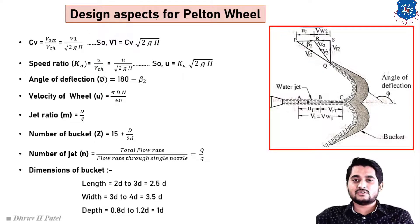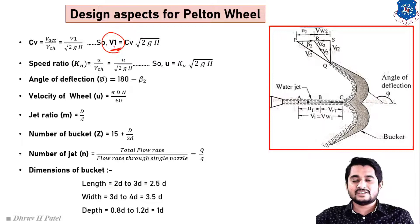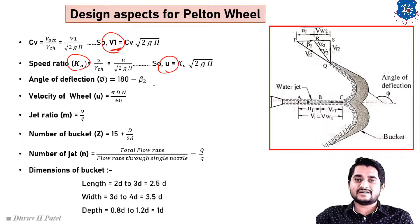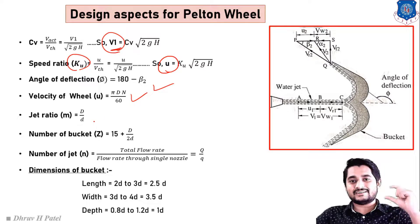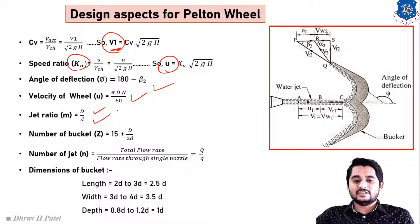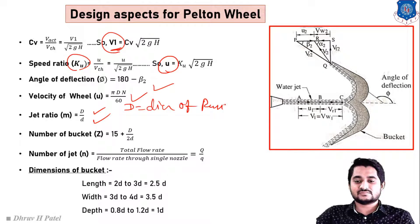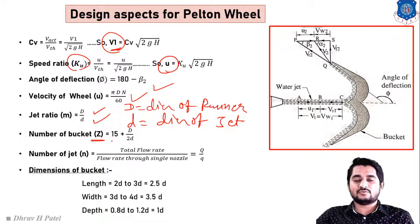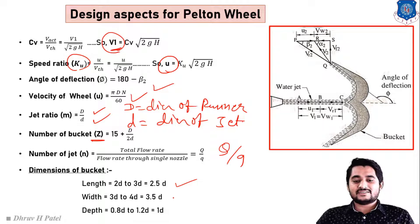Let us quickly revise the design equations for the Pelton wheel turbine. Cv equals v1 divided by root(2gH), giving jet velocity v1. Speed ratio Ku equals u divided by root(2gH), giving blade velocity u equals Ku × root(2gH). Deflection angle phi equals 180 minus beta2. Wheel velocity u equals pi*D*N/60. Jet ratio equals capital D divided by small d. Number of buckets Z equals 15 plus D/(2d). Bucket dimensions: length 2.5d, width 3.5d, depth 1.0d.